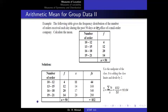When you have grouped data, you don't know the exact values within each class, so you use the class midpoint (class mark). Multiply the midpoint by the class frequency, sum these products, and divide by the total frequency. Note that the computed mean may not be a whole number even if the variable takes only whole-number values — for instance, an average of 16.64 orders might be rounded to approximately 17.